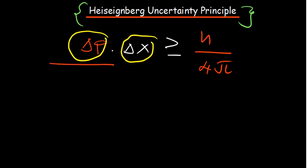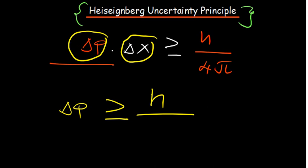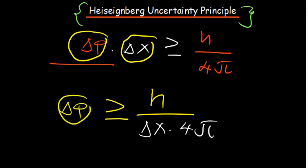If we make the uncertainty in momentum the subject of our formula, we notice that ΔP will be either greater than or equal to Planck's constant over the uncertainty in position multiplied by 4π. These are in inverse proportion, and this is what basically gives us the definition.